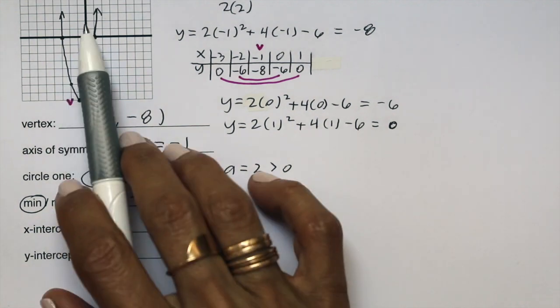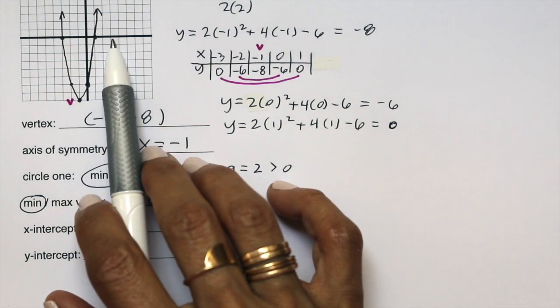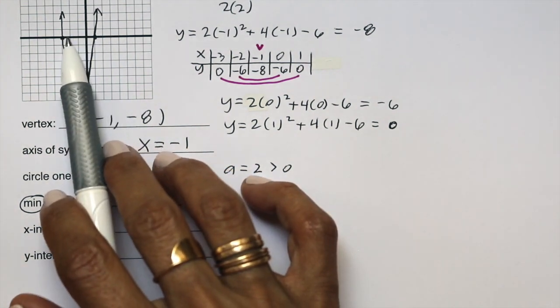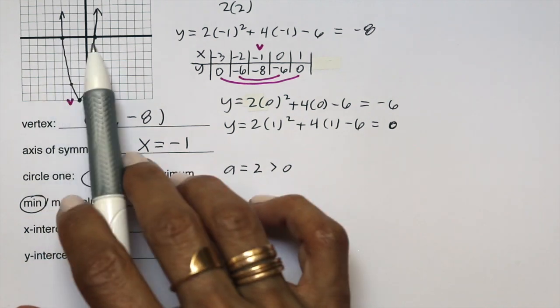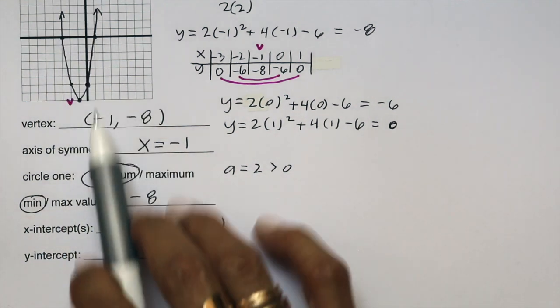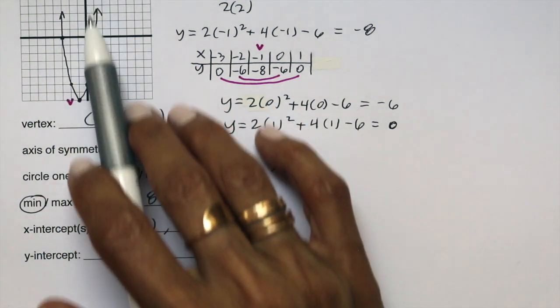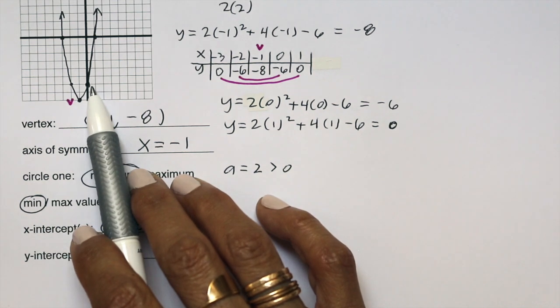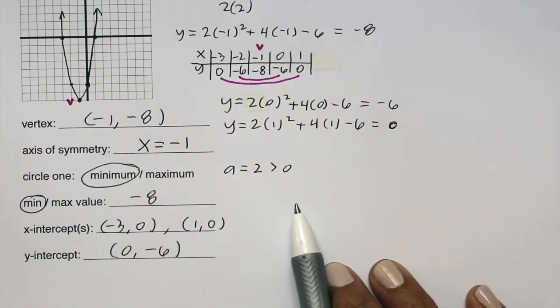The x-intercepts, visible from the graph, occur at negative 3, 0 and 1, 0. The y-intercept, where the graph crosses the y-axis, is at 0, negative 6.